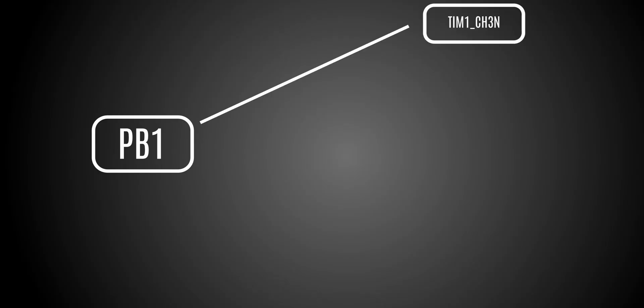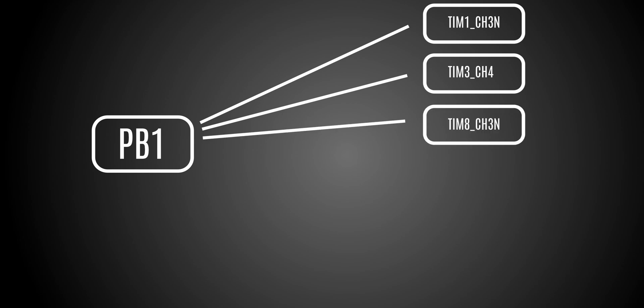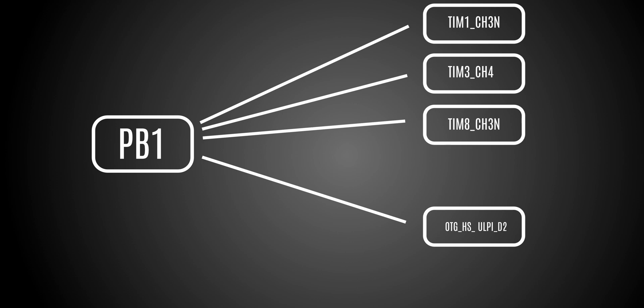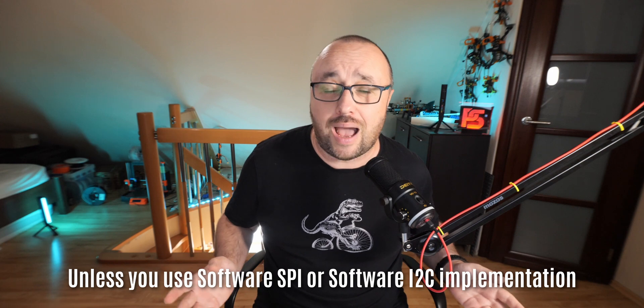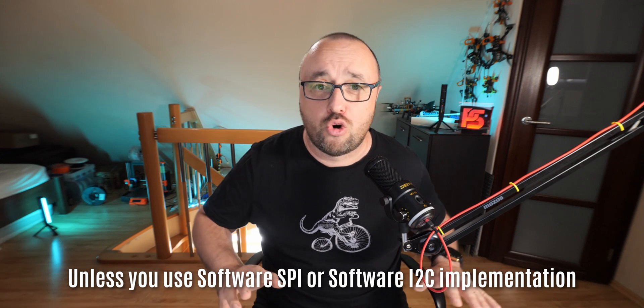At the same time, GPIO PB1 — the same port, next pin — can be used with timer 1 channel 3N, timer 3 channel 4, timer 8 channel 3N, and OTG HS ULPI D2. No assignment to any serial port at all. Those are all the functions those pins can be assigned to — only those, and only one at a time. PB0 can be assigned only to those timers and those channels, and there is no chance that STM32 PB0 will work as the SPI or I2C bus. It's just never going to happen.